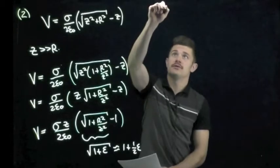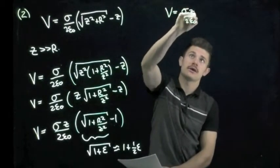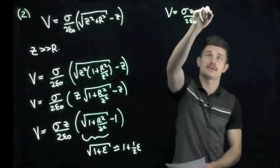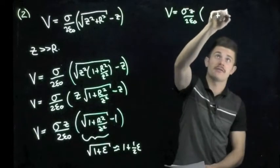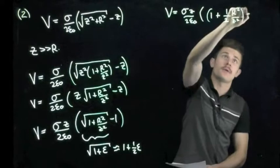So we continue and we have that v is now sigma times z over two epsilon naught. And we bring up what we have inside here. So we have one plus one half r squared over z squared minus one.